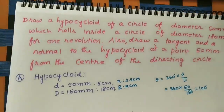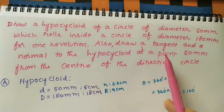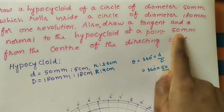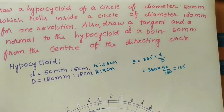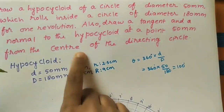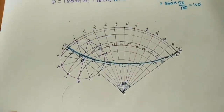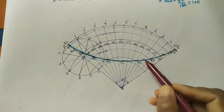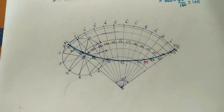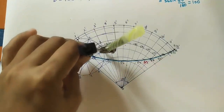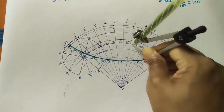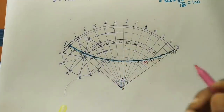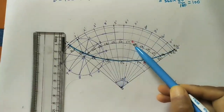Now draw the tangent and normal to the hypocycloid at a point 50 mm from the center of the directing circle (the bigger circle). Using a compass, take 5 cm distance from center O and mark the intersection point on the curve — call it M. With M as center and the radius of the smaller circle, draw an arc cutting the center arc.